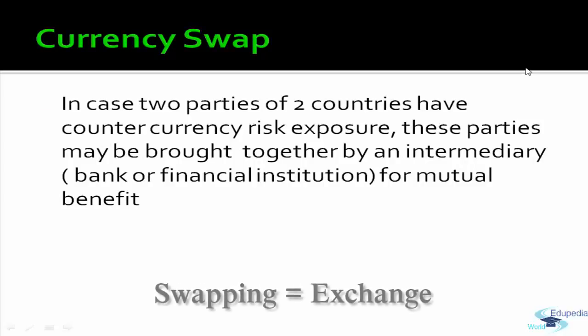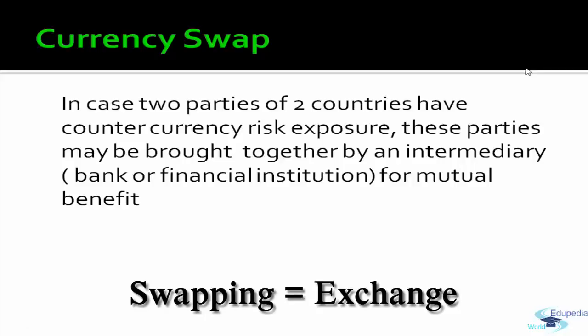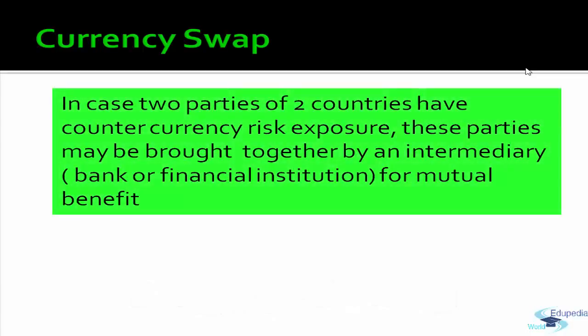The next method is currency swap. Swapping means exchange, so currency swap means exchange of currencies. When two parties from two different countries have opposite risk exposures — for example, a US party with Indian rupee exposure and an Indian party with US dollar exposure — both parties can come together, similar to interest rate swaps in derivatives. An intermediary brings them together and both parties get a mutual benefit by exchanging their currency obligations.